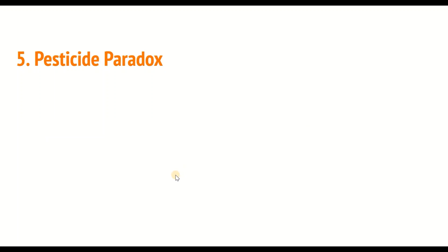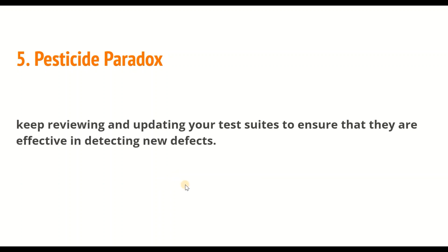The fifth principle is: the pesticide paradox. This principle states that no new defects will be discovered if you run the same test cases again and again after a certain period — it relates to regression testing. You need to keep reviewing and updating your test suites to ensure that they are effective in detecting new defects.